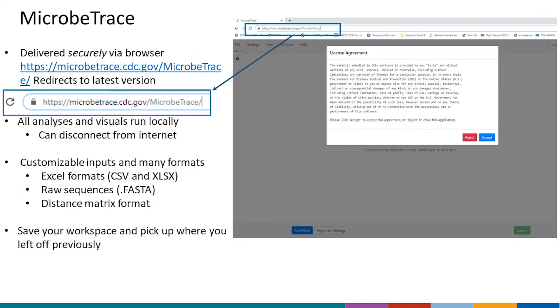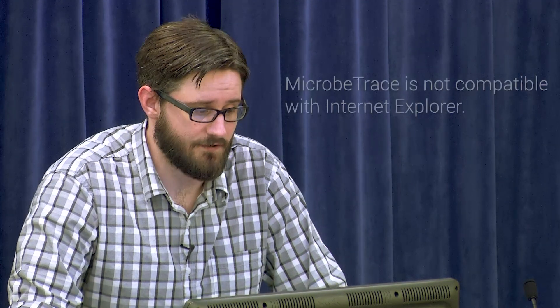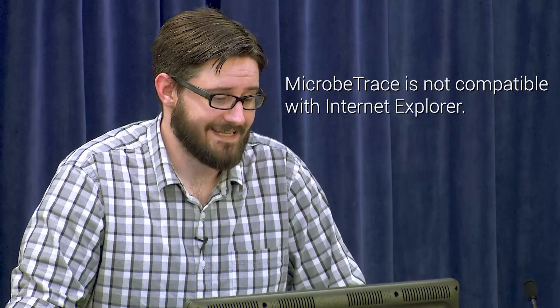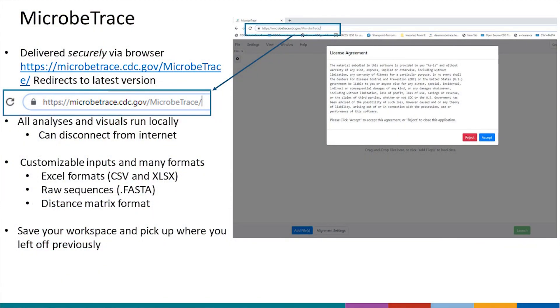MicrobeTrace is meant to visualize these data sets. We typically work with Google Chrome, although it also works in other common browsers like Mozilla Firefox. Ultimately, it is delivered to your browser securely — you navigate to a website, it downloads the entire application to your computer, and you can actually switch off from the internet and disconnect and it will still continue to function as normal. The goal is to ensure your data stays local on your computer and is not being shipped out over the internet.